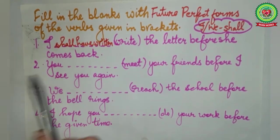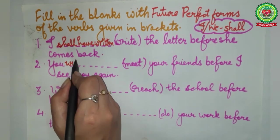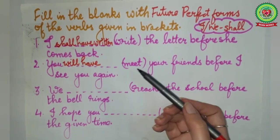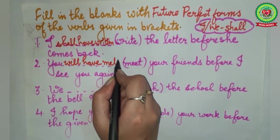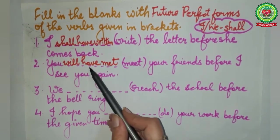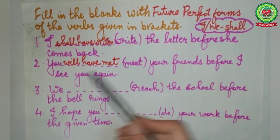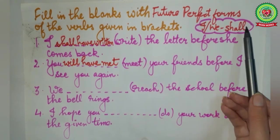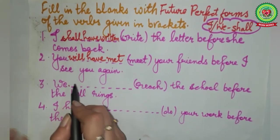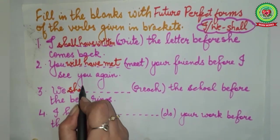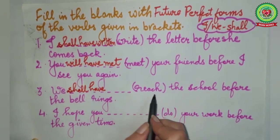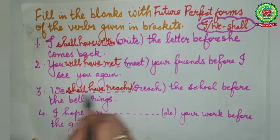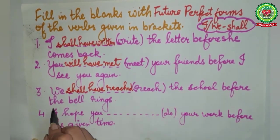Second sentence: subject is 'you,' so we use 'will have.' Past participle of 'meet' is 'met.' Answer: 'You will have met your friends before I see you again.' Third sentence: subject is 'we,' so we use 'shall have.' Past participle of 'reach' is 'reached.' Answer: 'We shall have reached the school before the bell rings.'